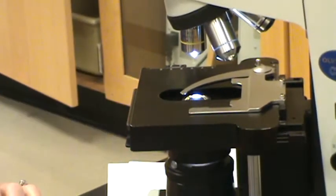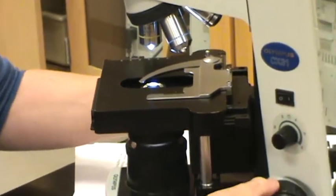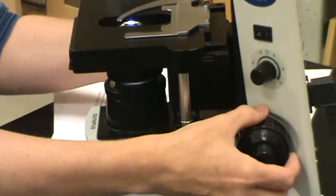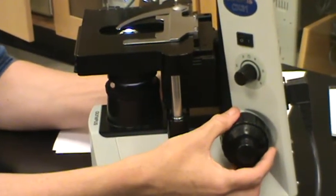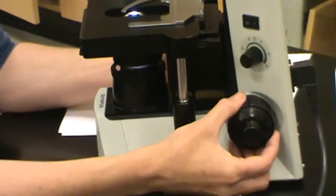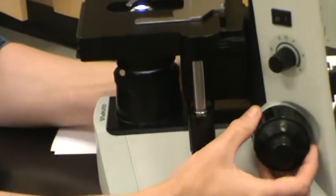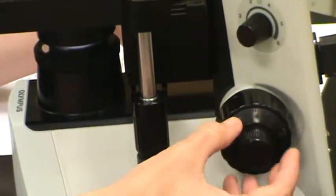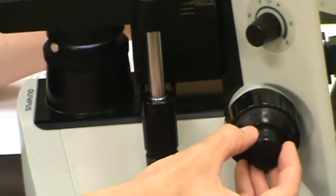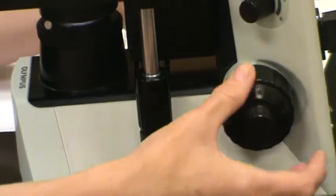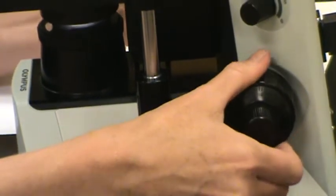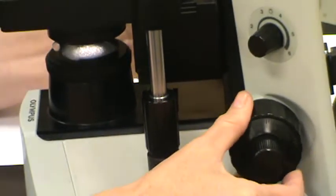At the back of the scope, accessible by both hands, are two really important knobs. These are both focus adjustment knobs. The larger of the two knobs is the coarse adjust knob. The smaller knob, or inner knob, is called the fine focus knob. Both of these knobs move the stage to help you focus your specimen.